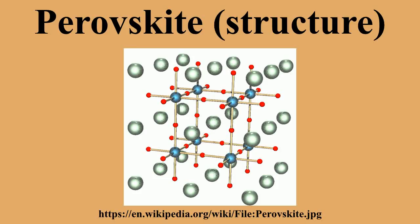Conversely, off-centering of an undersized B cation within its octahedron allows it to attain a stable bonding pattern. The resulting electric dipole is responsible for the property of ferroelectricity, shown by perovskites such as barium titanate that distort in this fashion. The orthorhombic and tetragonal phases are the most common non-cubic variants. Complex perovskite structures contain two different B-site cations, resulting in the possibility of ordered and disordered variants.